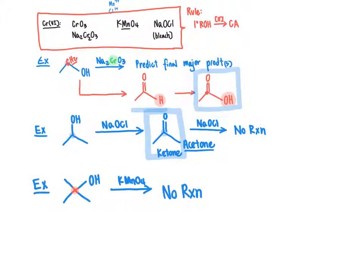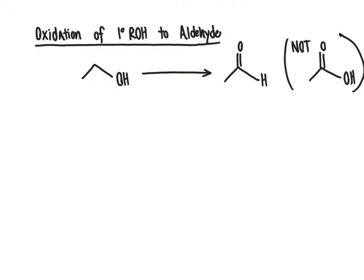What if our goal was to take a primary alcohol and convert it into an aldehyde product rather than going all the way to the carboxylic acid? We need specialized reagents to accomplish that, because our typical reagents lead to the full complete oxidation of the alcohol all the way to the carboxylic acid. If we want to do just the partial reaction — oxidizing the primary alcohol to only the aldehyde — we're going to look at reagents that will allow us to accomplish that.